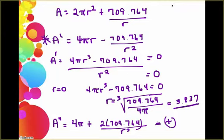So I now know that if you let your radius be 3.837 centimeters, you're going to have your minimum surface area.